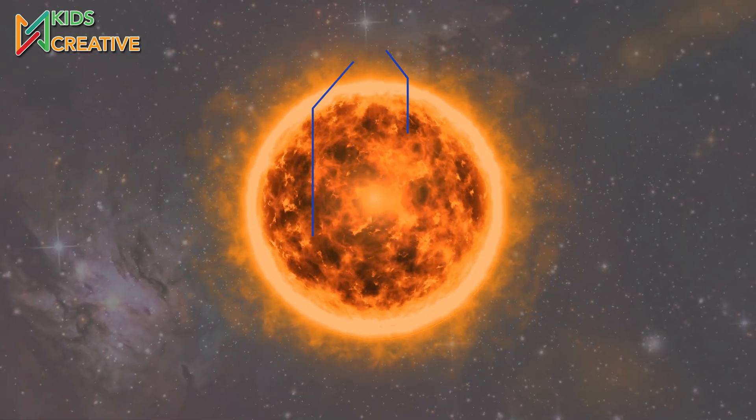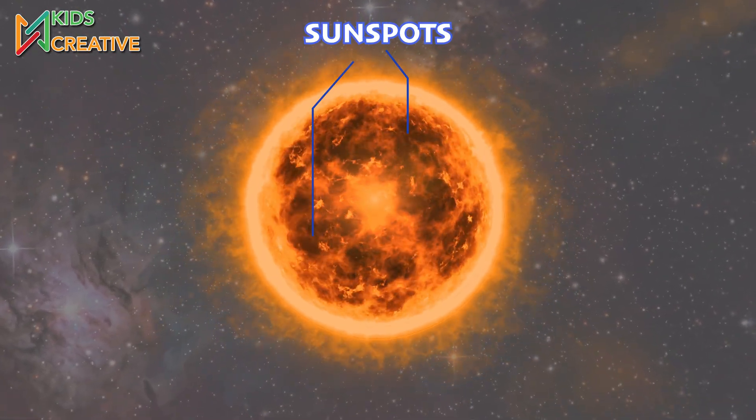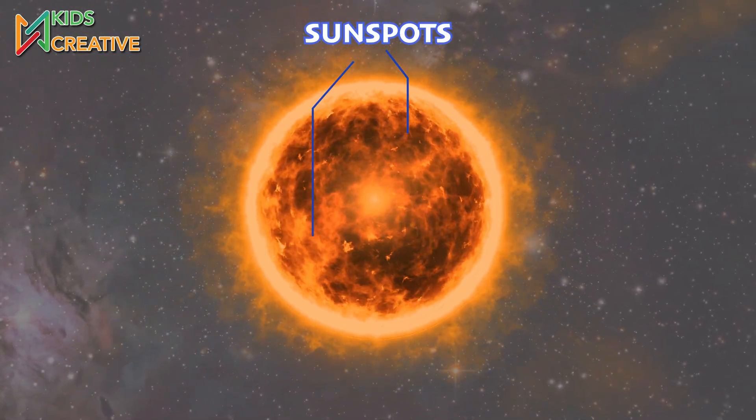Dark patches, called sunspots, appear and disappear. They're cooler areas on the Sun.